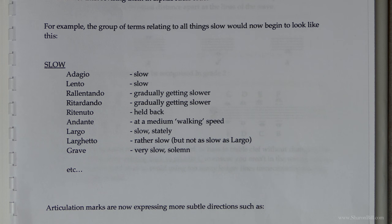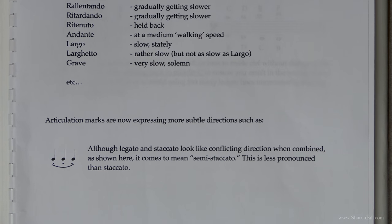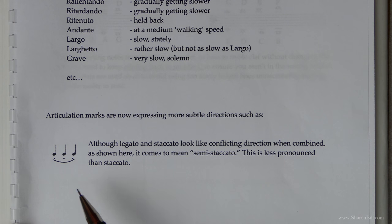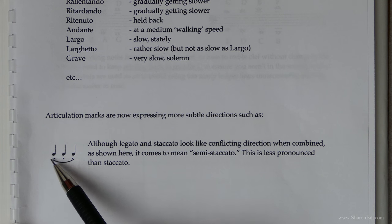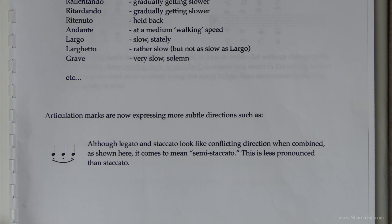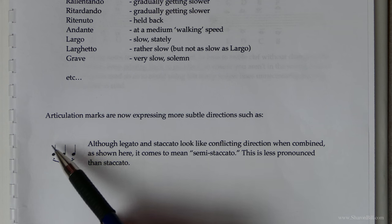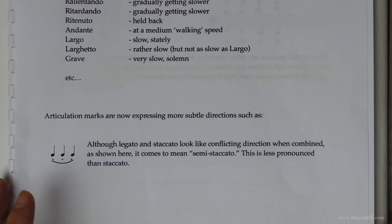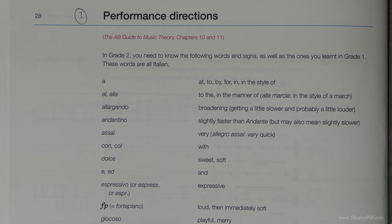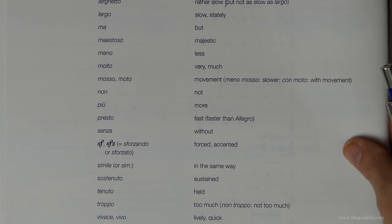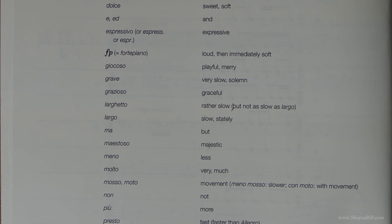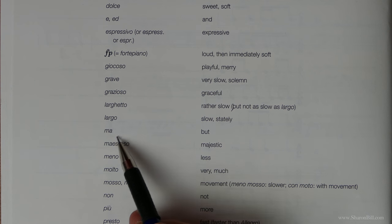So there are articulation marks now as well. In Grade 1 we dealt with staccato and legato. In Grade 2 we have what looks like a confusing mixture — we've got staccato and legato combined. However it makes sense when you remember that it means semi-staccato — it's a less pronounced version of staccato. So there's lots of revision to learn here, and we've also got linking words, so think about grouping those in thematic sections too.